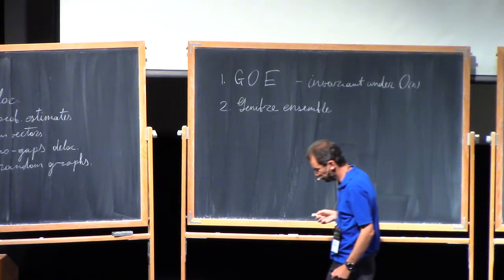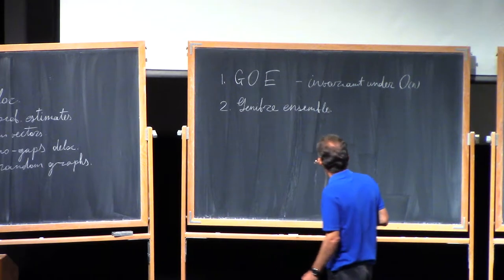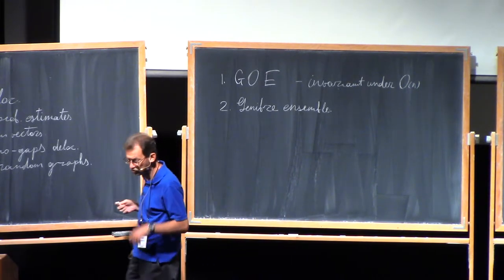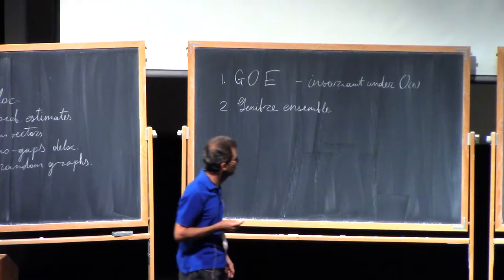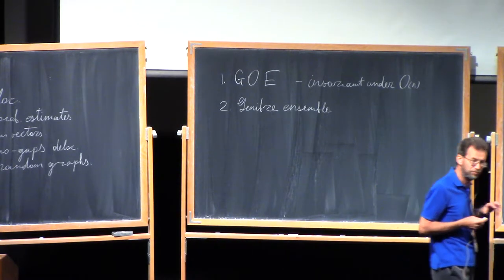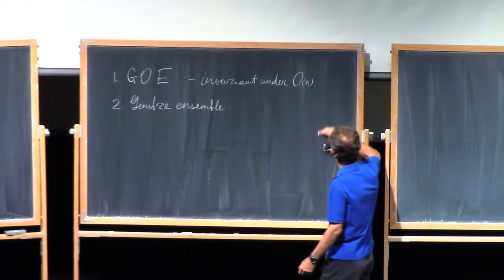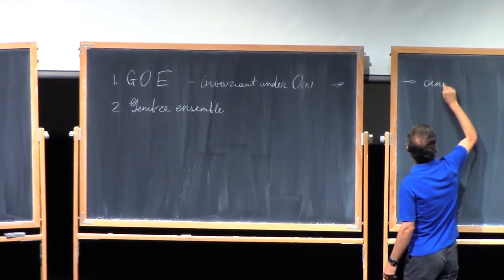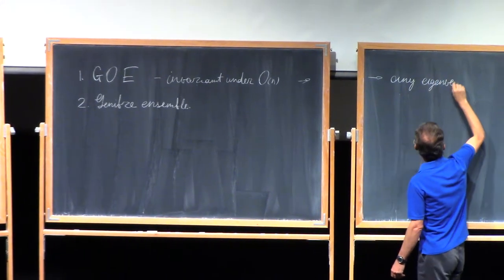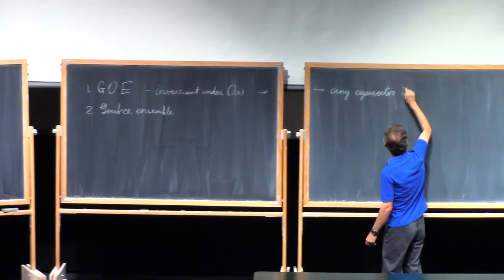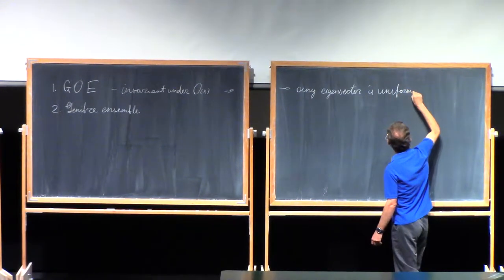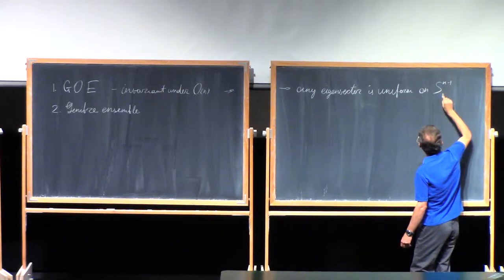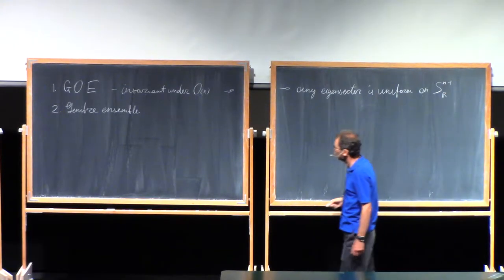If we consider a unit eigenvector, then an eigenvector being a function of the matrix should share the same invariance properties. So the distribution of the eigenvector will be invariant under the action of the orthogonal group, which means any eigenvector is uniformly distributed on the unit sphere — in this case, the real unit sphere.